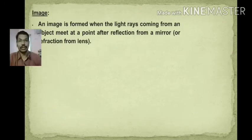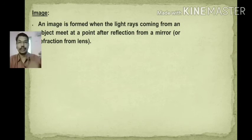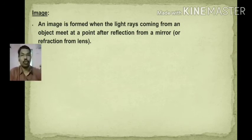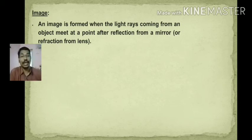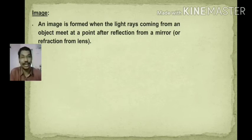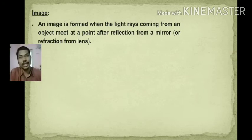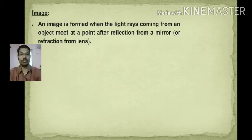What is an image? An image is formed when the light rays coming from the object meet at a point after reflection from a mirror. After reflection, if two rays meet, then that is called an image.